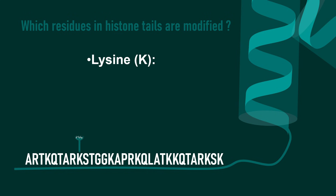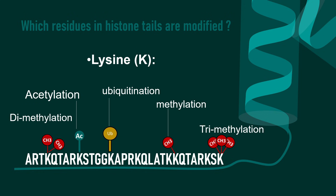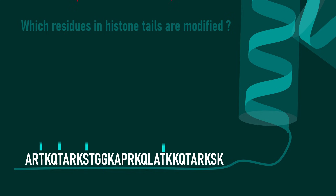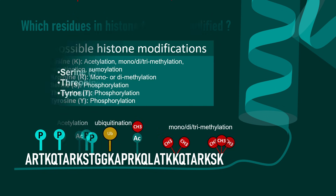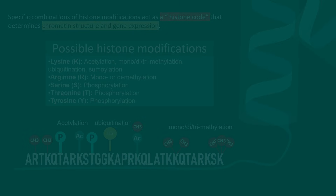One of the most extensively modified residues is lysine, which can undergo acetylation, ubiquitination, or methylation — methylation can be mono-, di-, or trimethylation. Arginine can undergo mono- or dimethylation, and phosphorylation can occur on residues like serine, threonine, or tyrosine. All these modifications taken together create a histone code that can alter chromatin structure and gene expression.